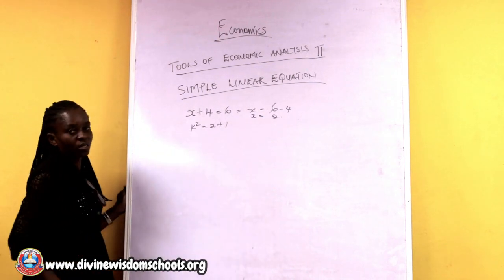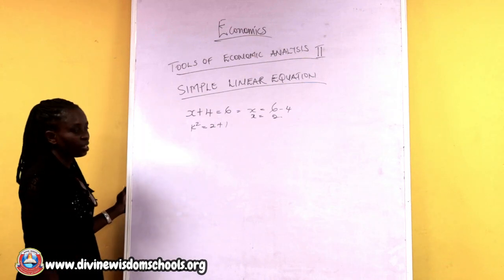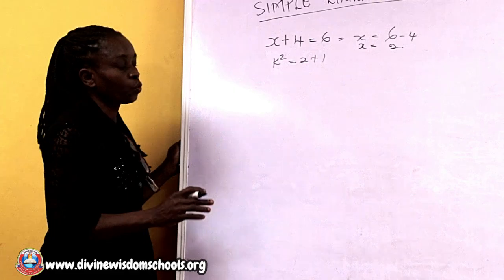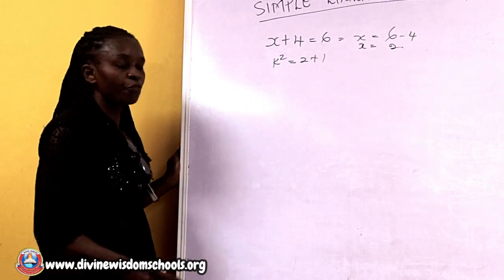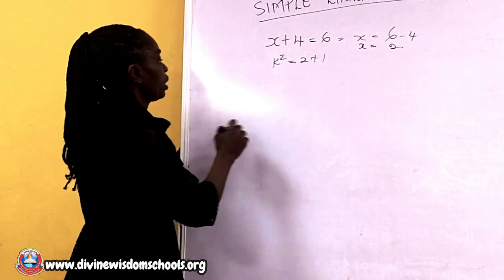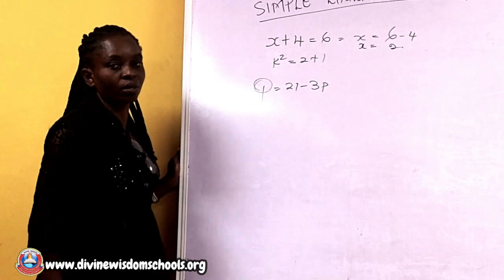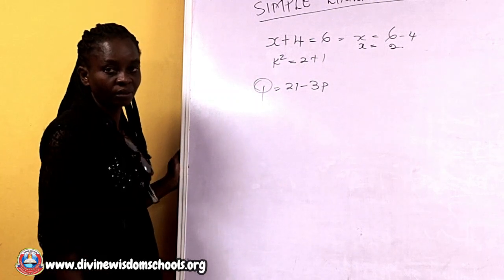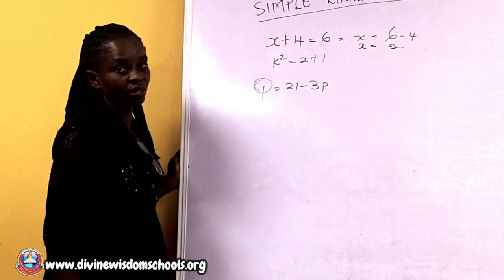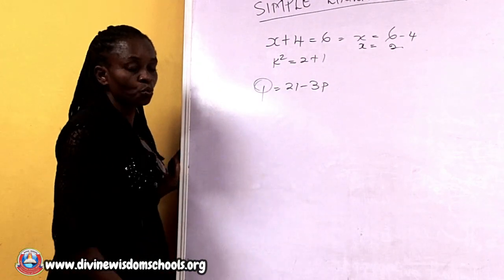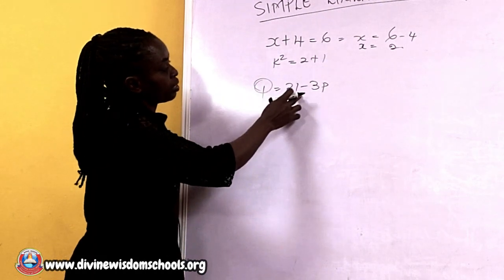But this is not our main concern, because it is normally said that where mathematics stops is where economics begins. So, for instance, if we are given the equation Q equals 21 minus 3P to test the relationship between quantities, this is a linear equation because the unknown is raised to the power of one. Here, P stands for price and Q stands for quantity demanded.